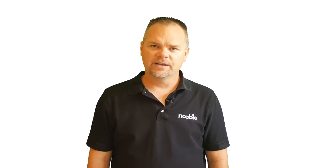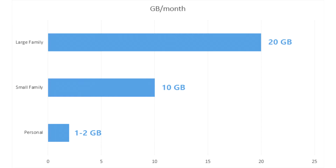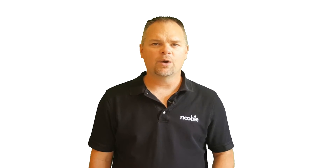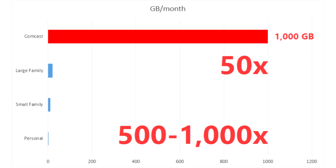To really understand what a terabyte is, let's talk about your cellular data plan for a minute. If you are on a personal cellular data plan, you are probably allotted 1 to 2 gigabytes of data per month. A small family may have a 10 gigabyte per month plan, and a large family may have a 20 gigabyte per month plan. The terabyte of data that Comcast gives you each month is the equivalent of roughly 1,000 gigabytes — that's 50 times more data than the large family cellular plan, and 500 to 1,000 times more data per month than the personal cellular plan.